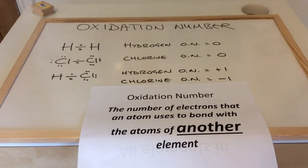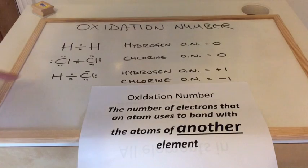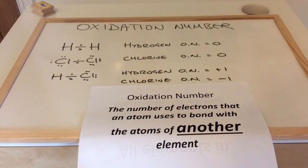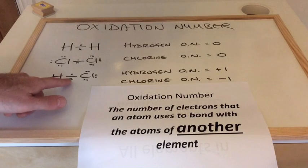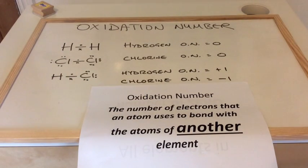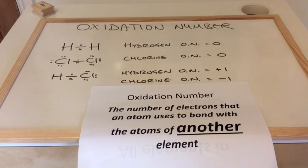In HCl however, the H is bonding to a Cl, and the Cl is bonding to an H. We need to look at how many electrons they are using. The hydrogen is using one electron to bond to the chlorine, so we give it an oxidation number of plus one. The chlorine is using one of its electrons to bond to the hydrogen, so it has an oxidation number of minus one. The sign is to do with electronegativity — chlorine is more electronegative than hydrogen, so the more electronegative atom takes the negative sign.